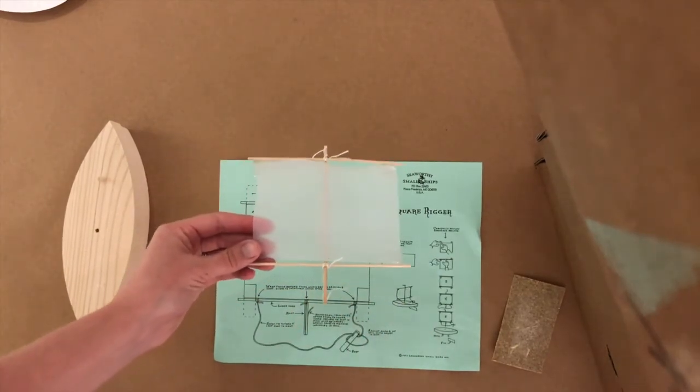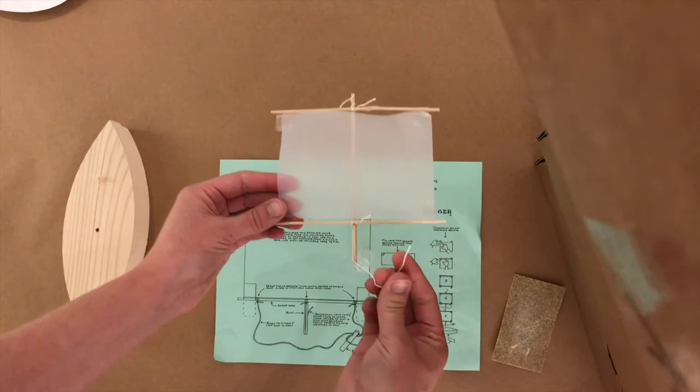All right, now you need your longer piece of string. And this one is a little bit easier, but not super simple. We're going to wrap twice and then tie it with a square...